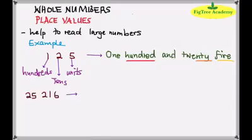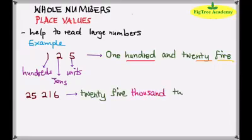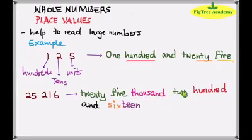Another example: twenty five thousand two hundred and sixteen. Let's allocate the place values. Let's first write this in words. So it's twenty five thousand two hundred and sixteen. Let's see on this chart which illustrates the place values for 25,216.